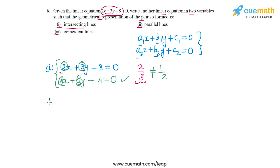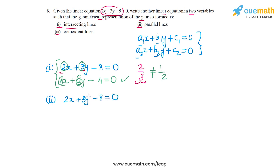Now in the second part, we have to get parallel lines. We need to find another equation such that its x and y coefficients are in the same ratio as the first equation — that is, in the ratio 2 by 3 — so that a1 by a2 will equal b1 by b2.